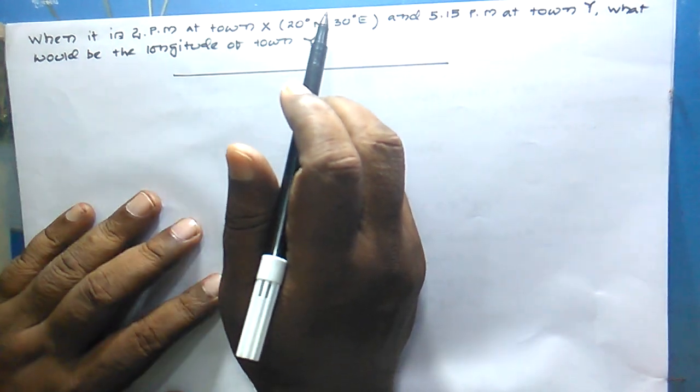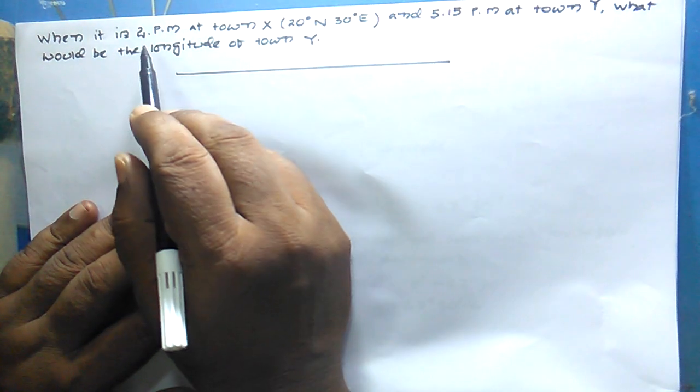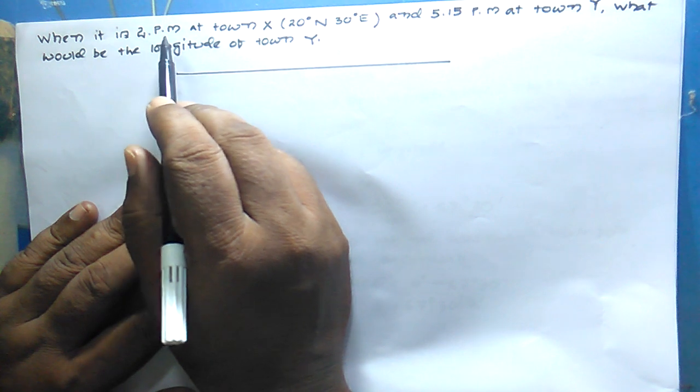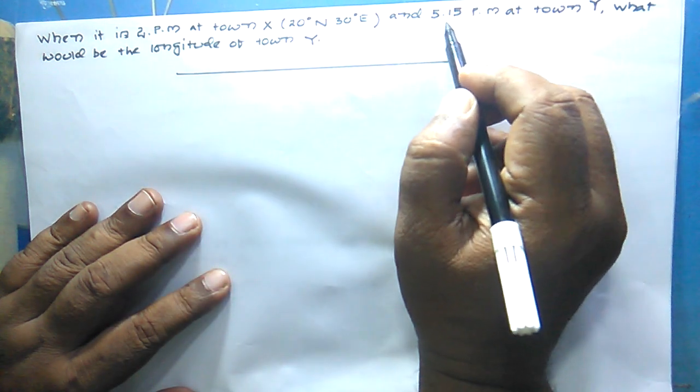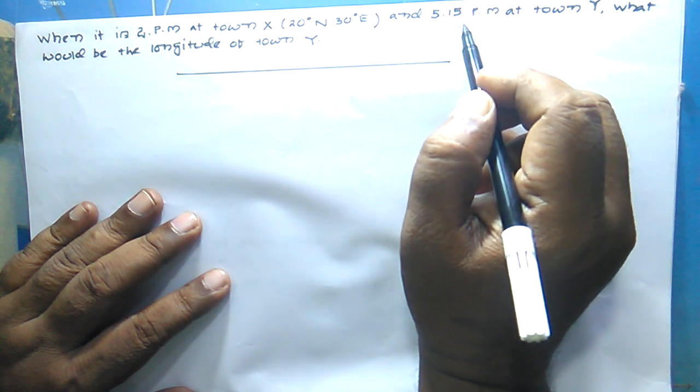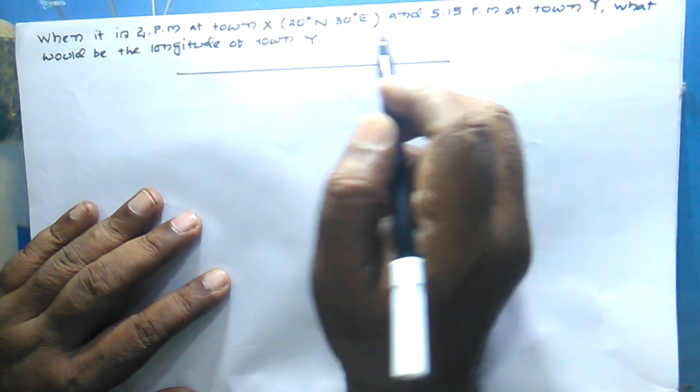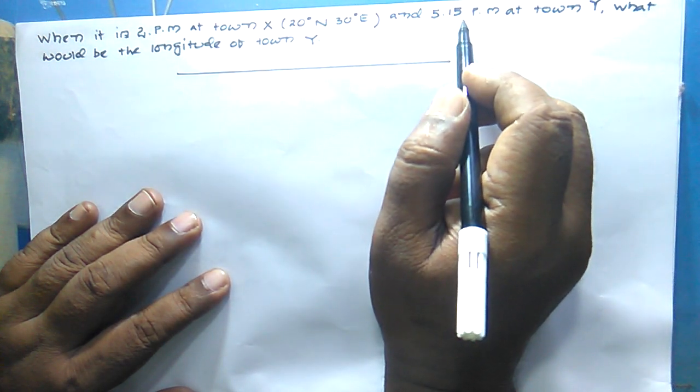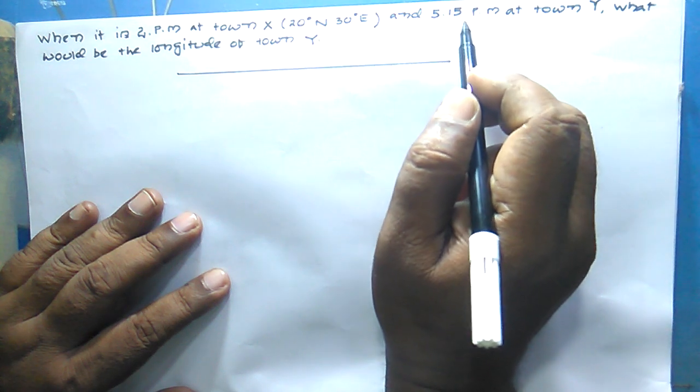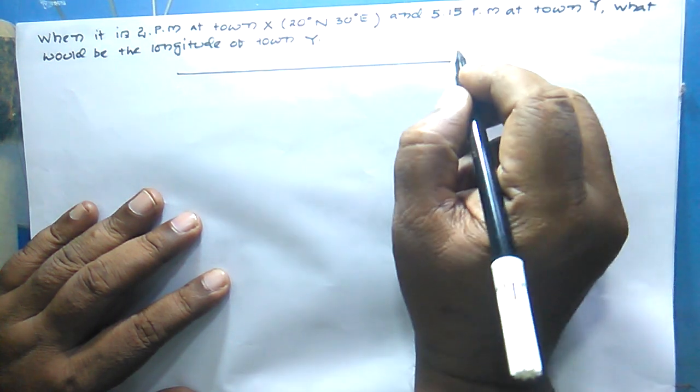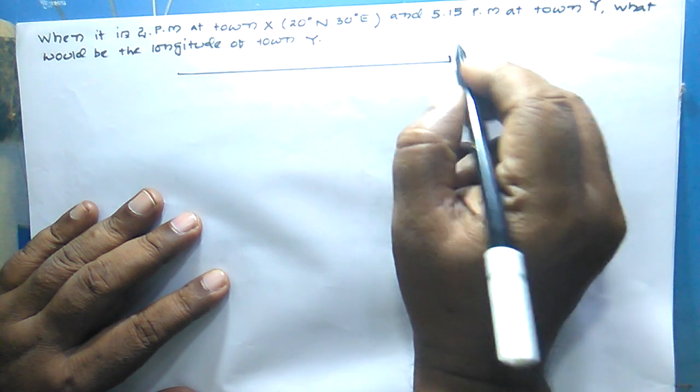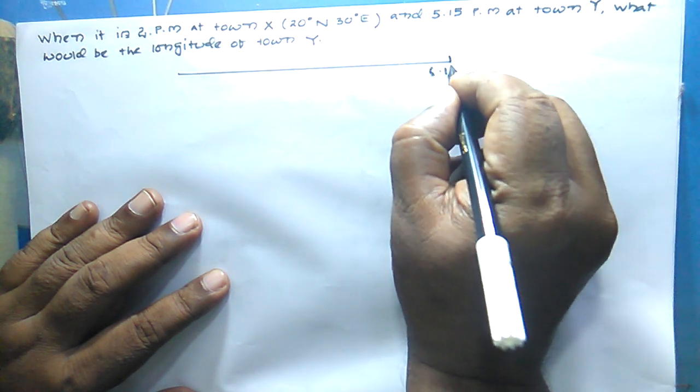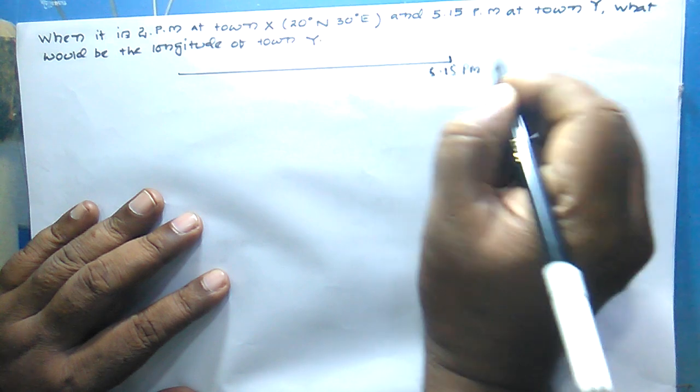If we look at these two times that are given, one place is 2 p.m. and another place is 5:15 p.m. Obviously, out of these two, the time 5:15 p.m. is ahead, so it will always be located further east.